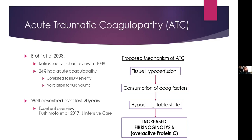The proposed mechanism is that tissue hypoperfusion from shock or endothelial injury causes consumption of all coagulation factors, leading to a hypo-coagulable state and a significant increase in fibrinolysis — proposed to be from overactive protein C. Many people think this is just DIC, but DIC involves both hypercoagulability and hypocoagulability. In acute traumatic coagulopathy, it is very much in the hypo-coagulable state — you don't see the fibrin deposition that you see in DIC related to other pathologies.